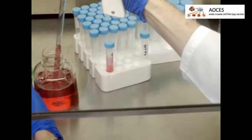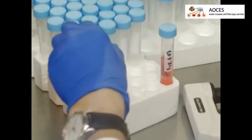Count the cell suspension using a cell counter. Dilute the cell suspension to 500 to 1,000 cells per 20 microliters in culture medium.